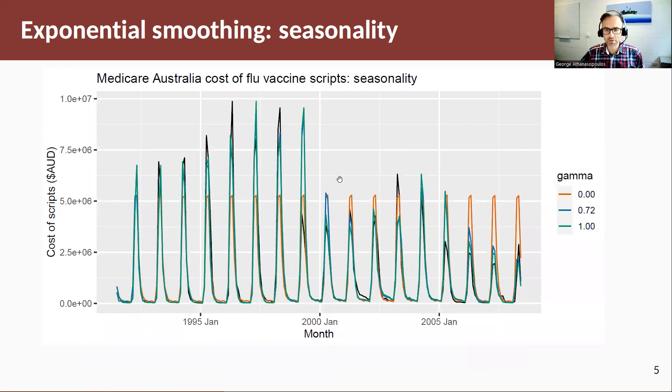For this method and for this data set, the optimal, we estimate the method and we'll talk about estimation soon and gamma is equal to 0.72, which is quite high, but you can see why it is quite high because the seasonal component in this data set changes quite rapidly and the red and the green line are the two extremes where we have 0 or 1.